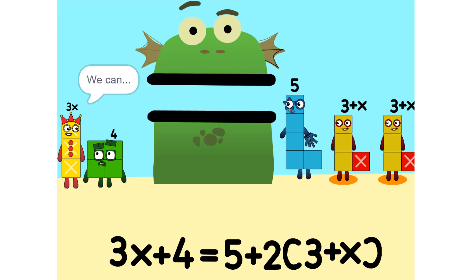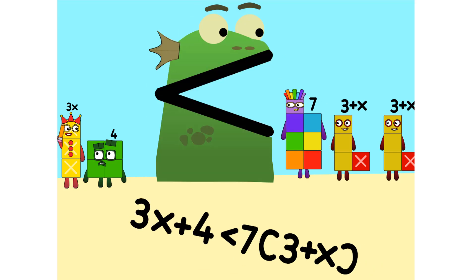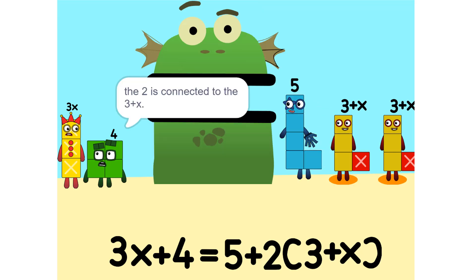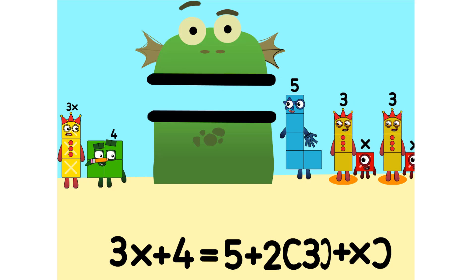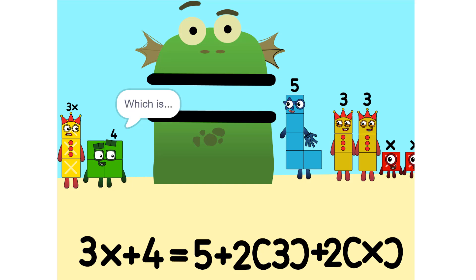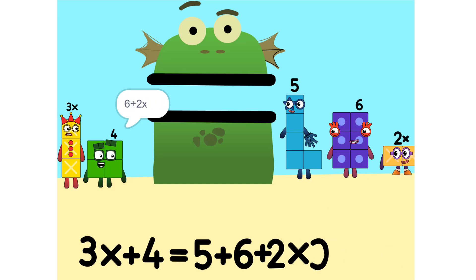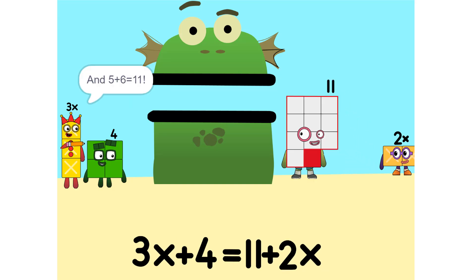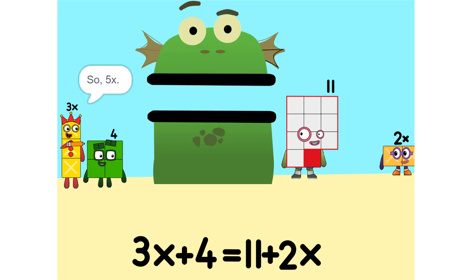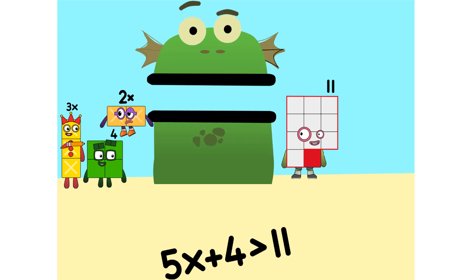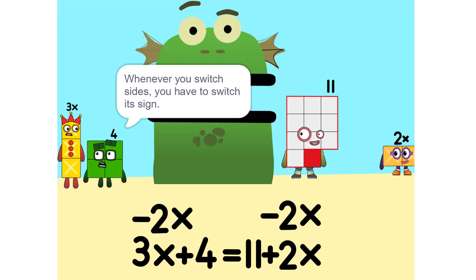I see something. We can add these. Why did that happen? Because the 2 is connected to the 3 plus X. Oh, I see. It's like adding apples and oranges. You can't. So what do we do? Okay. See the 2 times 3 plus X? That's the same as 2 times 3 plus 2 times X. Which is 6 plus 2X. Oh. And 5 plus 6 is 11. Yeah. Now we have to move things around. We have to move this 2X to this side. Whenever you switch sides, you have to switch its sign.